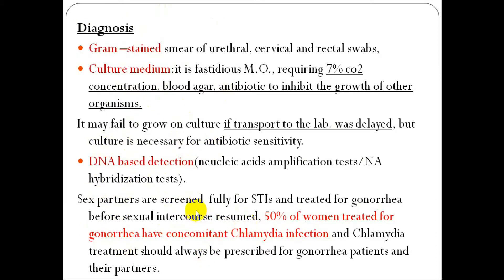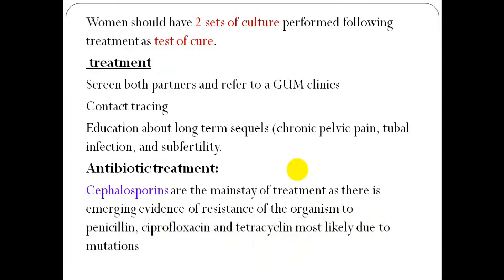Testing is done for all patients with sexually transmitted infections, and they are treated before sexual intercourse resumes. Fifty percent of women treated for gonorrhea have concomitant chlamydia infection, so treatment should cover both bacteria. Women should have two sets of cultures performed following treatment, with screening of both partners, contact tracing, and education about complications such as chronic pain, tubal infection, subfertility, and adhesion.